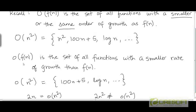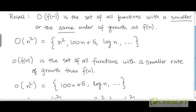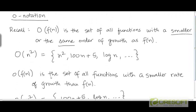Little-o is defined to be the set of all functions with a strictly smaller rate of growth than f. Notice the difference between this definition and the definition of big-O: big-O not only contains functions with a smaller rate of growth than f, but also functions with the same rate of growth as f.